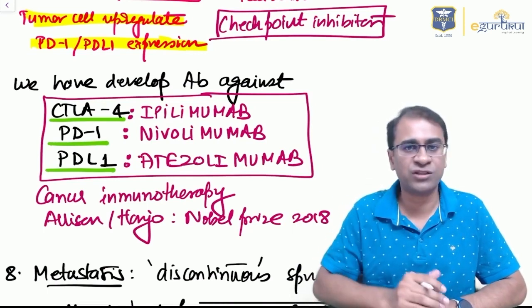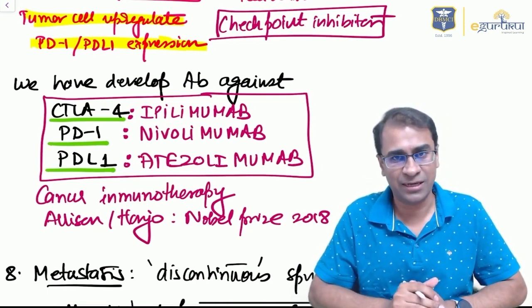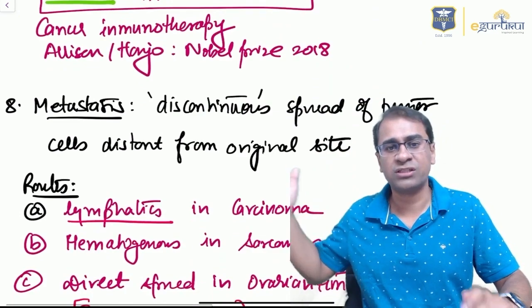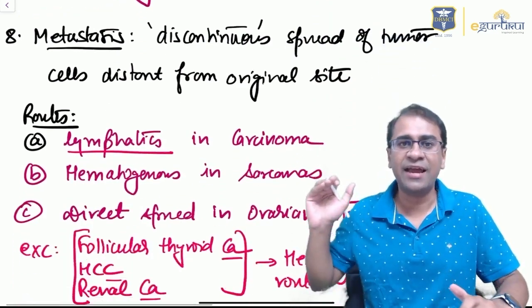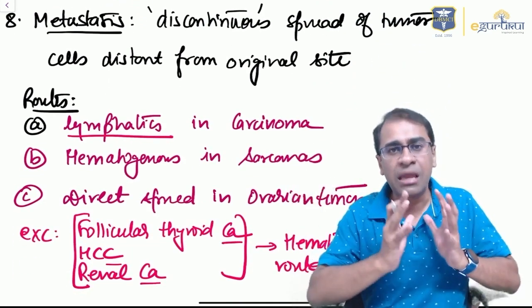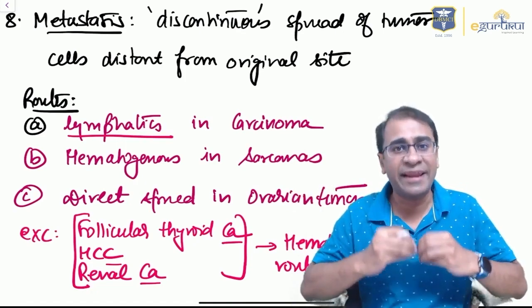Next, there is discontinuous spread, called metastasis. It can occur by lymphatics for carcinoma, hematogenous for sarcomas, and direct spread occurs in ovarian tumors.